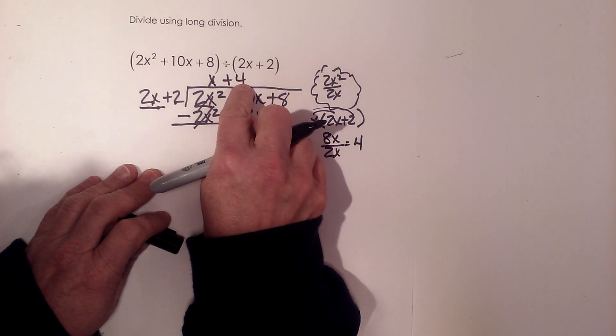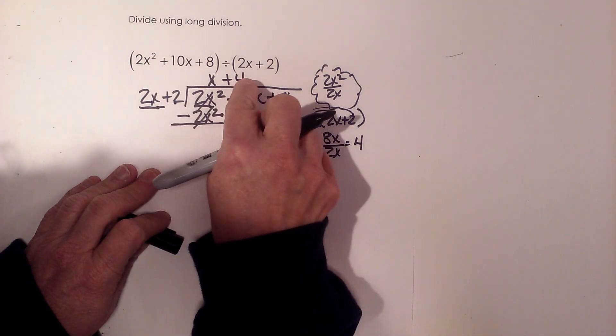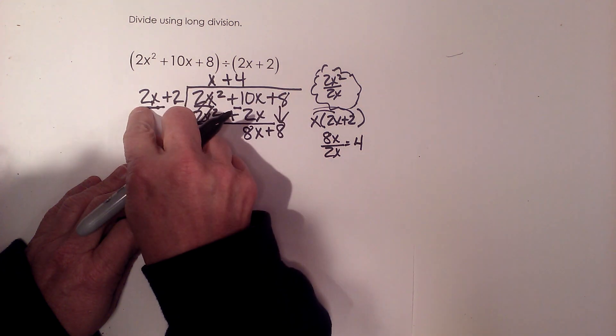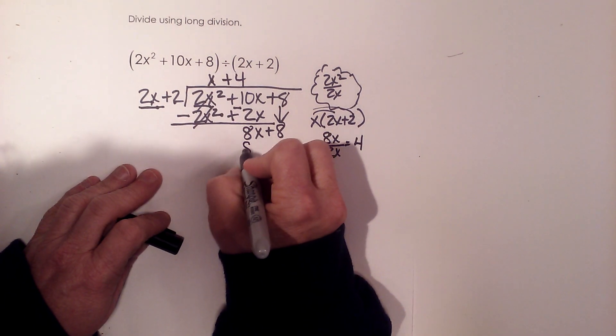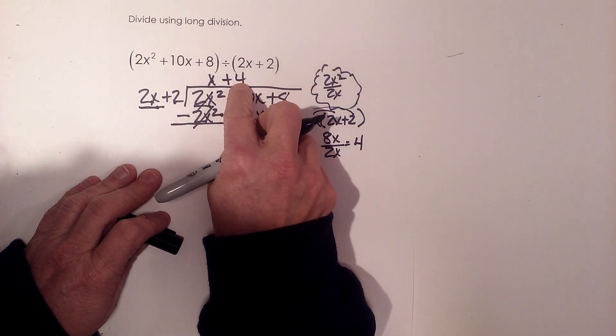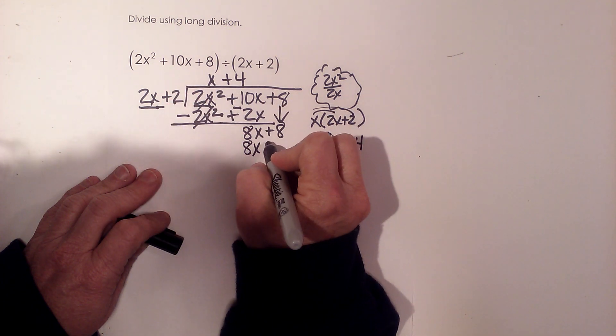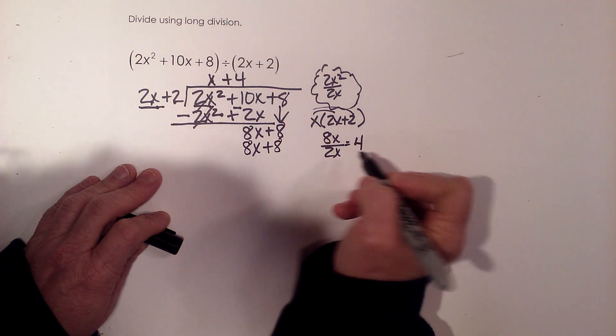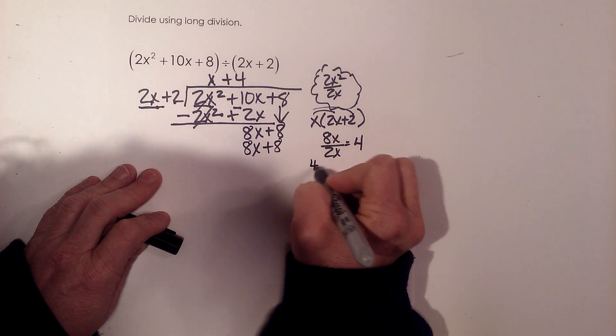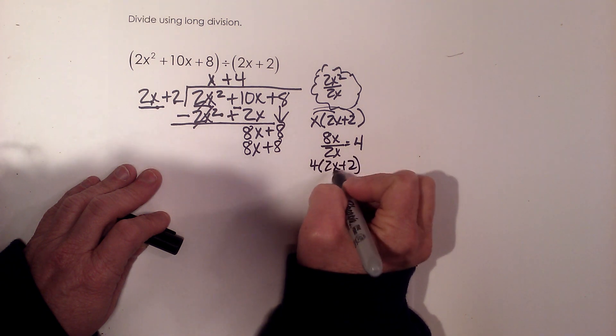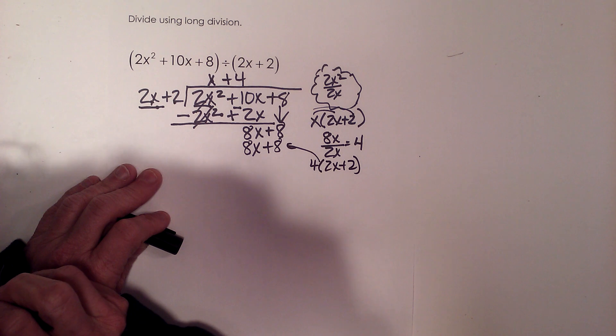That's what I need to multiply the binomial by. So I'm going to take 4 times 2x to get 8x, and I'm going to take 4 times 2 to get a positive 8. So in other words, I'm taking 4 times 2x plus 2, and that's where this line is coming from.